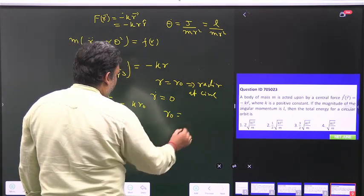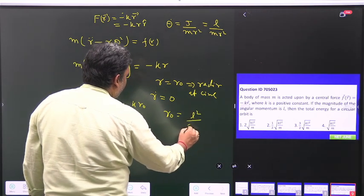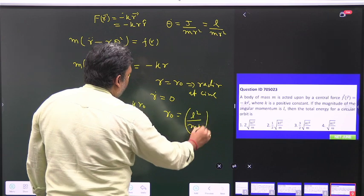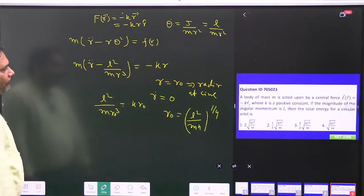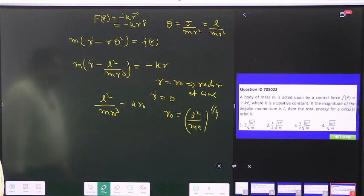And from there we can get the value of r naught, that value is equal to l square upon mk to the power 1 by 4. And now we can go for the total energy.